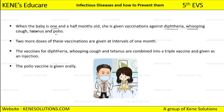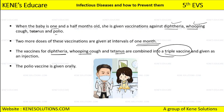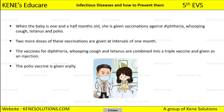Two more doses of these vaccinations are given at intervals of one month. The vaccines for diphtheria, whooping cough, and tetanus are combined into a triple vaccine given as an injection. The polio vaccine is given orally — they give you polio drops through your mouth and they are not injected into your body.